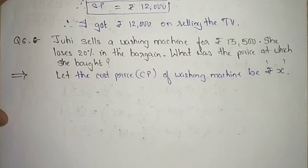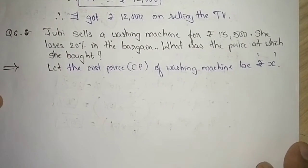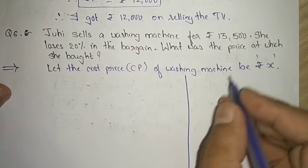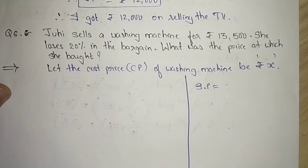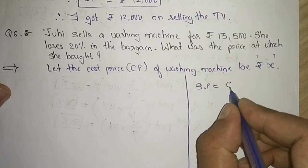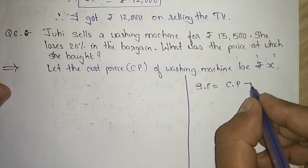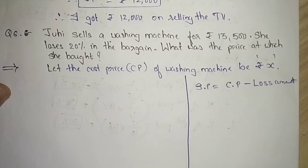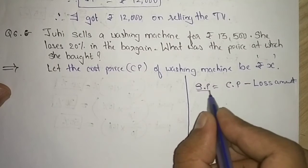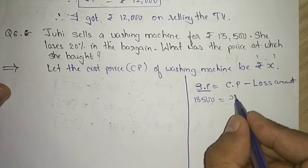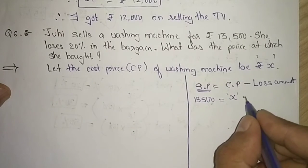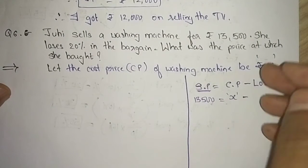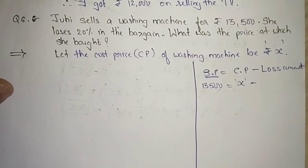Logically, the selling price is derived as: cost price minus loss amount equals selling price. We already have the selling price, that is 13,500. What we don't have is the cost price, which we've taken as x. The loss amount will be calculated from the 20 percent loss given.